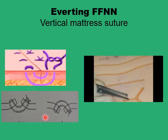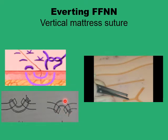If you reverse it — for example when stitching a hollow viscus like a pharyngoplasty or intestine — you end up having the shorter loop deeper and the longer loop more superficial, and this is going to cause inversion rather than eversion.